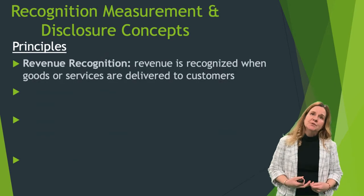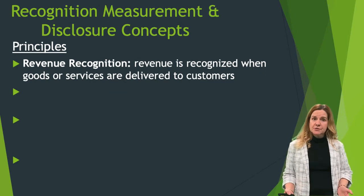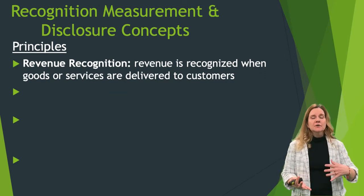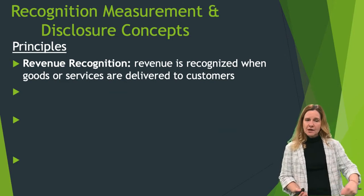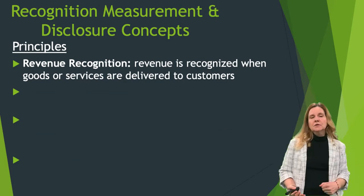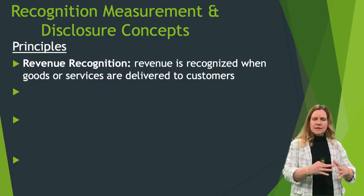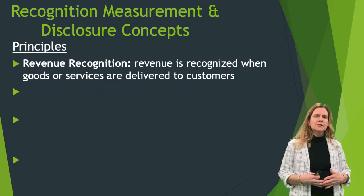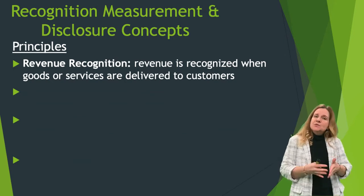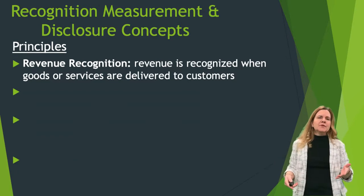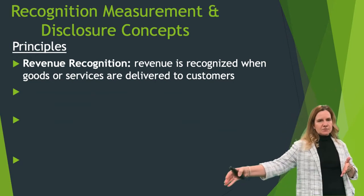Next is principles. The revenue recognition principle means revenue is recognized when goods or services are delivered to customers. We may recognize it at a point in time — for example, when a customer purchases a can of green beans off the shelf and walks out. It could also be over a period of time, such as rent for services. Sometimes we receive cash in advance before any service is performed, and as we perform services over time, we recognize the revenue — like memberships at warehouse club companies where you pay upfront and revenue is recognized over time.